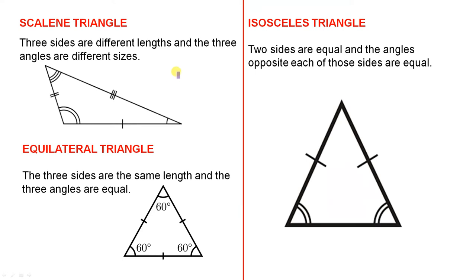We have the scalene triangle. Three sides are different lengths and the three angles are different sizes. These little strokes here — you've got one stroke, two strokes, and three strokes. When the strokes are all different, that means the sides are not the same. The three of them are all different because all the strokes are different. Similarly with the angles — you've got one little curve, two curves, and three curves — meaning all the angles are different, and that's why it's called a scalene triangle.